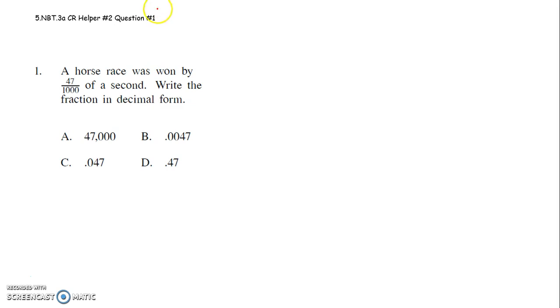Okay, so 47 thousandths. What we have to think about when we're writing 47 thousandths is our place value chart. So we have the ones place, then your lovely decimal point. After the ones is the tenths, then the hundredths.